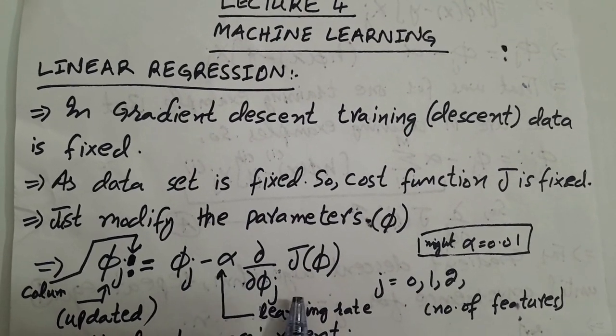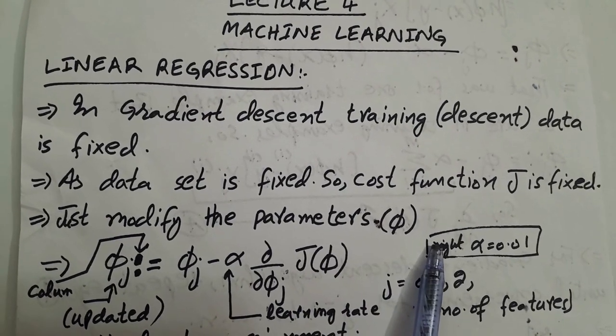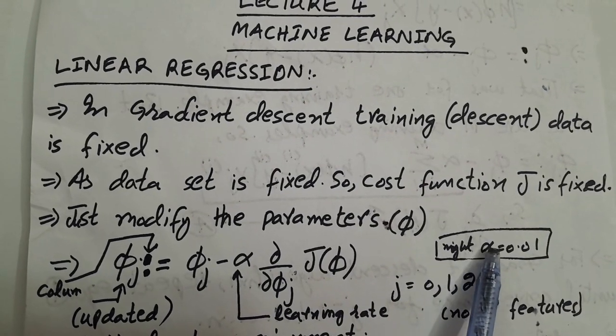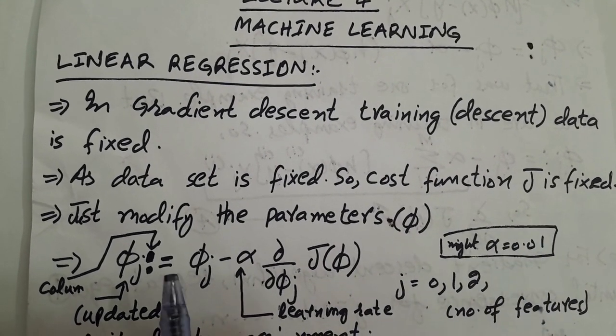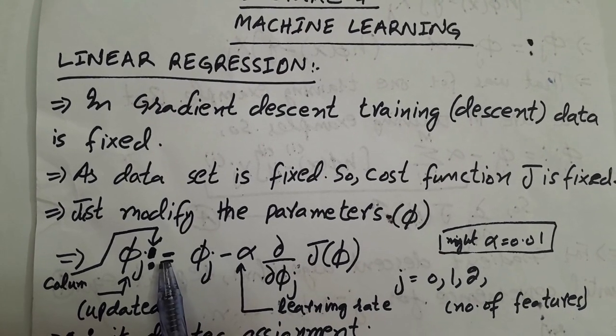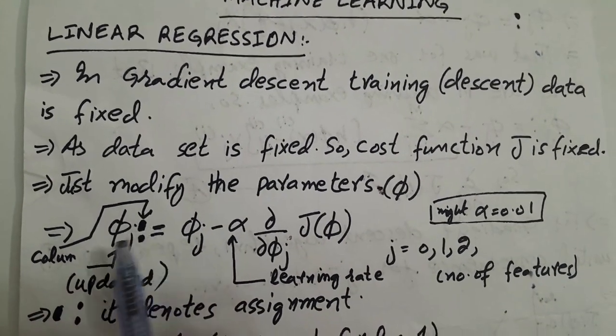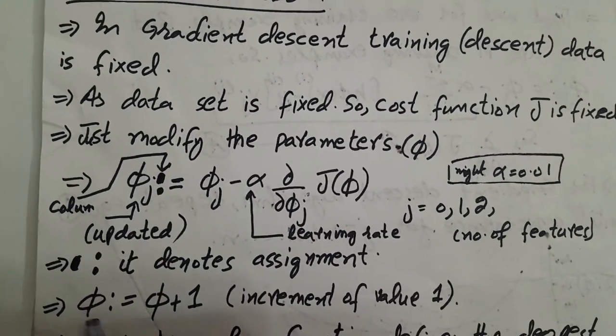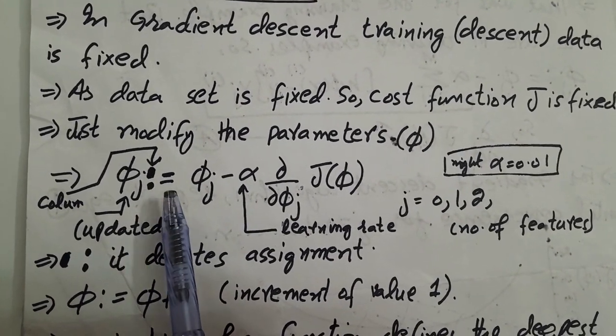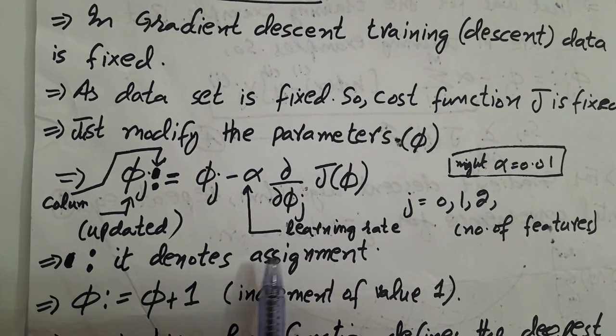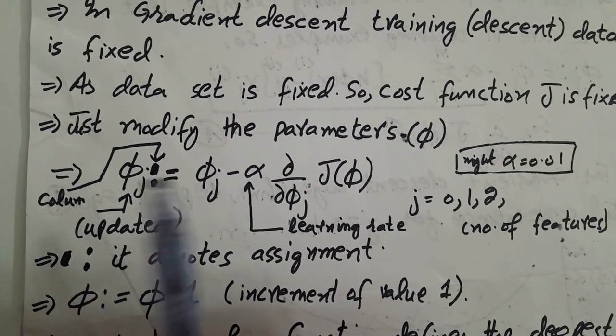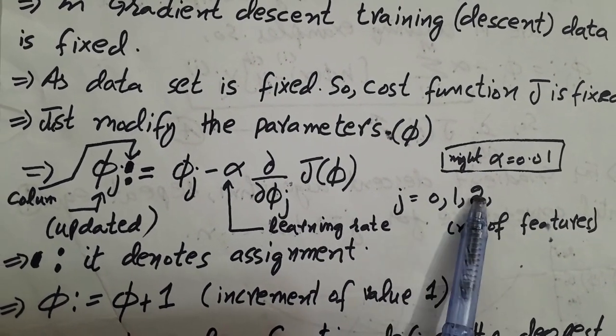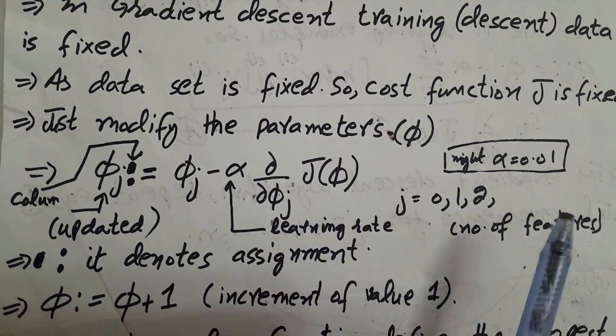Now here, alpha is the learning rate. In practice, alpha is usually 0.01. Now here, colon is used. Colon basically denotes the assignment operator. The colon is used here; it will increment one value every time or after every iteration. Here j is 0, 1, 2, which is the number of features already explained in the previous video lecture number 3.